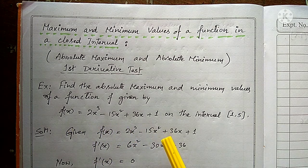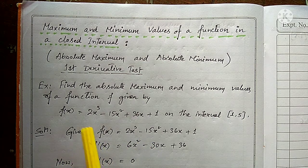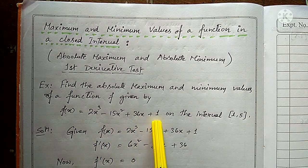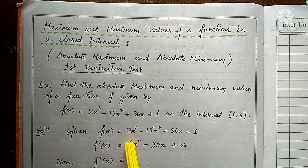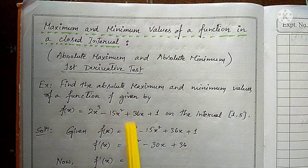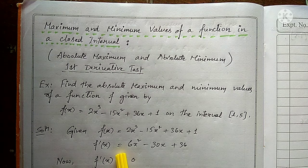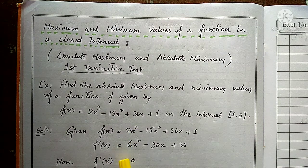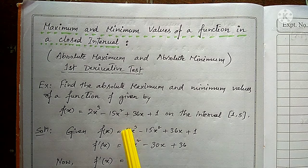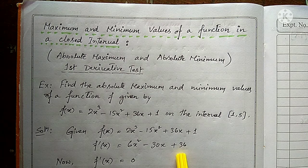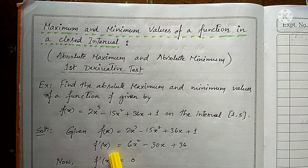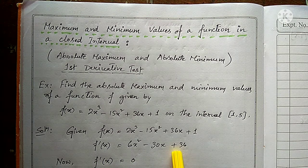Working rule Step 1: differentiate the given function with respect to x. For f(x) = 2x³ - 15x² + 36x + 1, differentiating gives f'(x) = 6x² - 30x + 36.